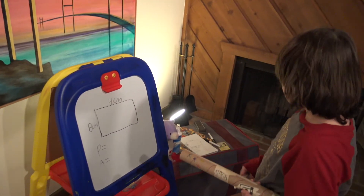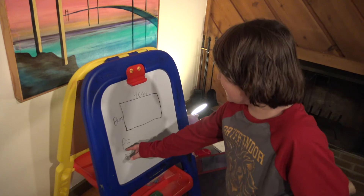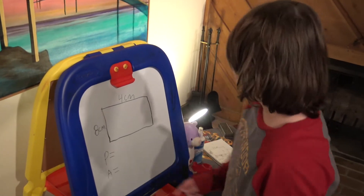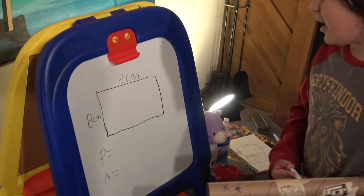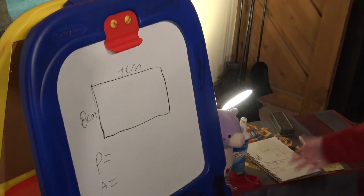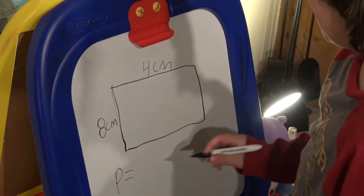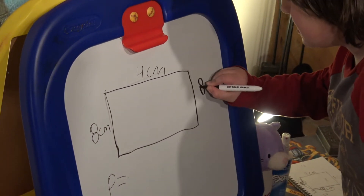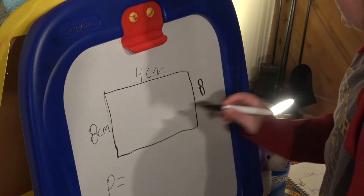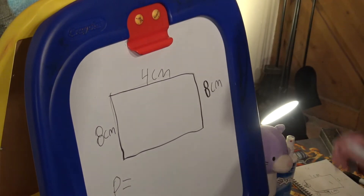So to find perimeter, P equals — perimeter is the space around. And then 8. What would this be? That would be 8, because 8 is on this side. And then centimeters.